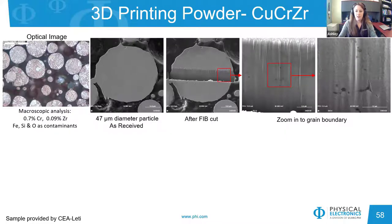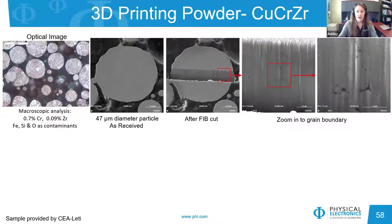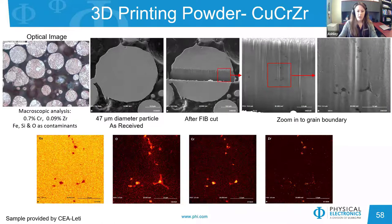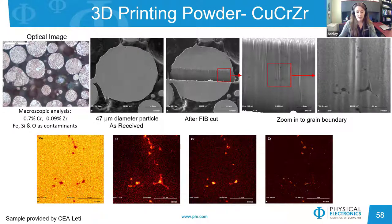The final application example is of a 3D printing powder consisting of copper, chromium, and zirconium — materials of significant interest in additive manufacturing. Macroscopic analysis showed 0.7% chromium and 0.09% zirconium with trace amounts of iron, silicon, and oxygen. To examine potential grain boundary diffusion within the powder particles, a FIB cut was made through a 47 micron diameter particle to expose the grain boundaries within. Auger maps of the grain boundary region clearly show how oxygen, chromium, and zirconium have segregated to and concentrated at the grain boundaries. This type of analysis could link grain boundary diffusion to the solidification speed of various particle sizes.